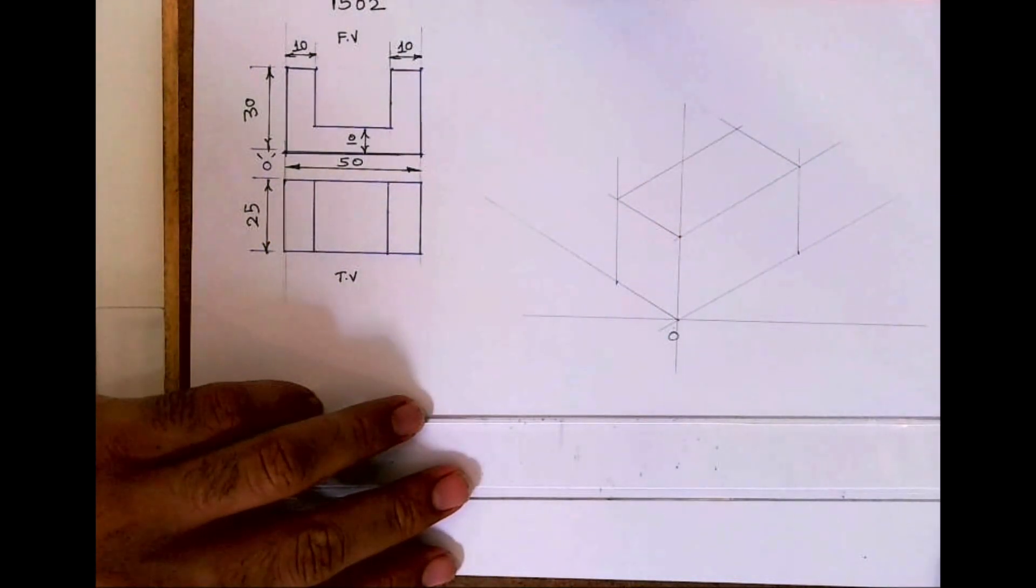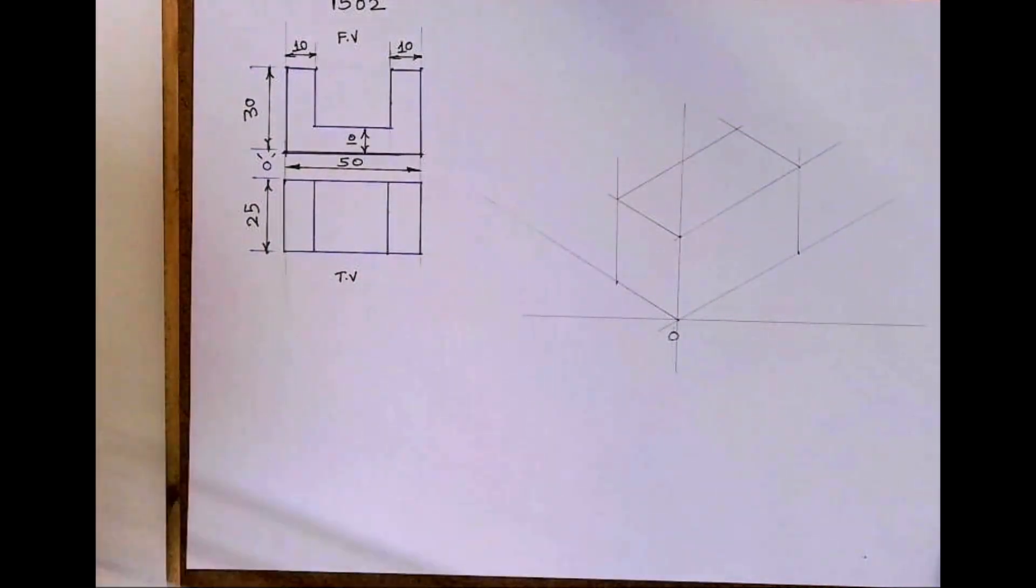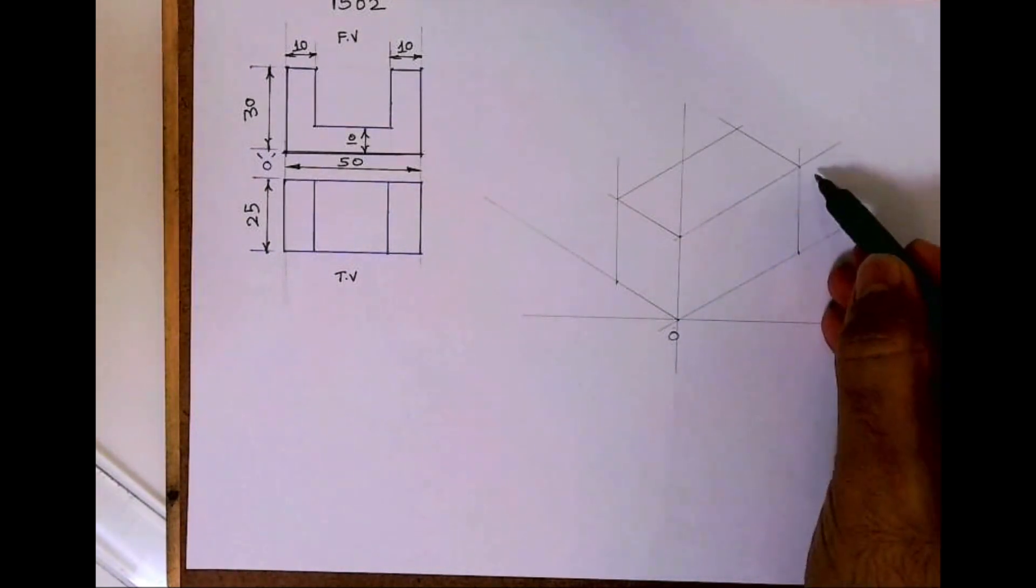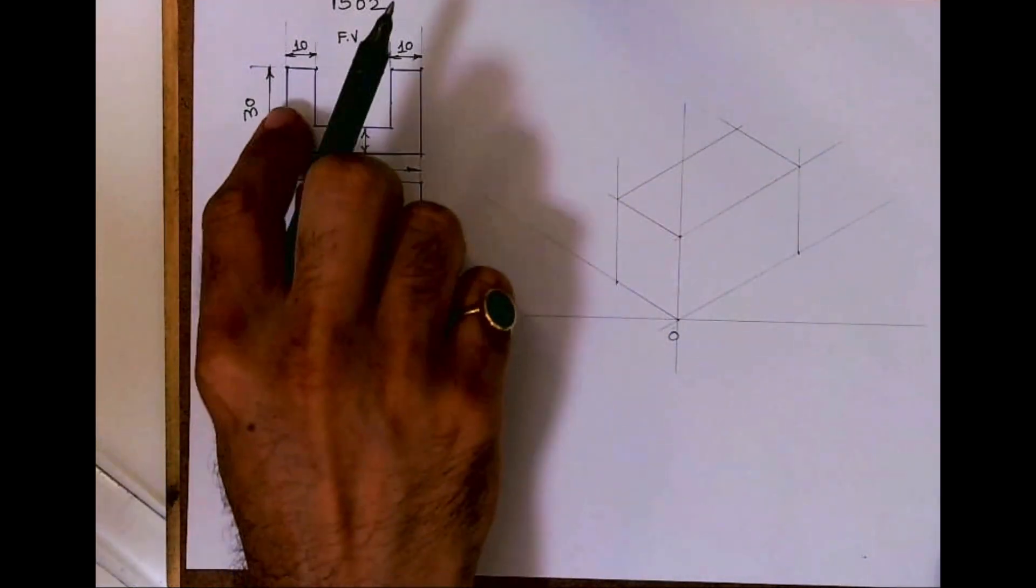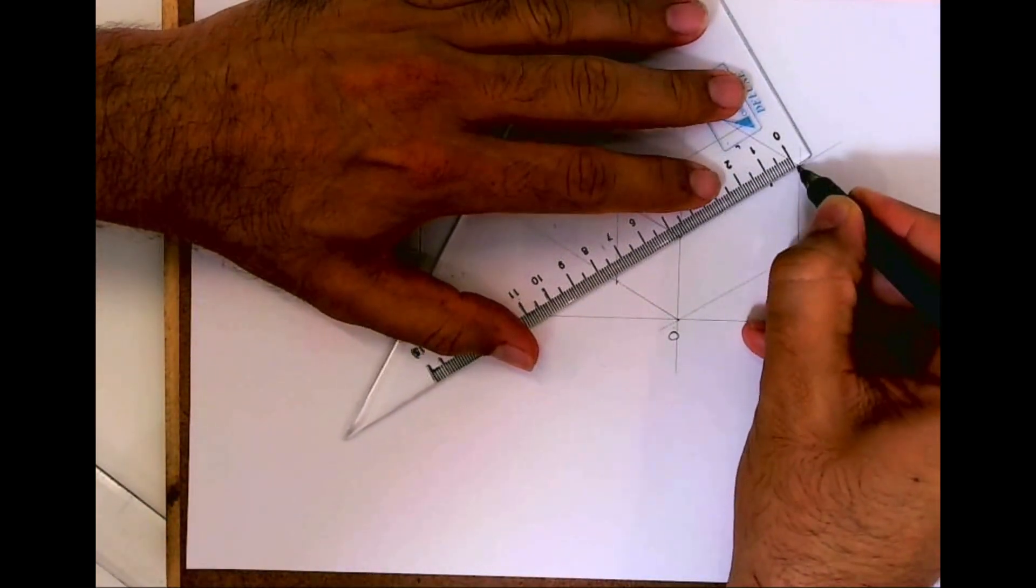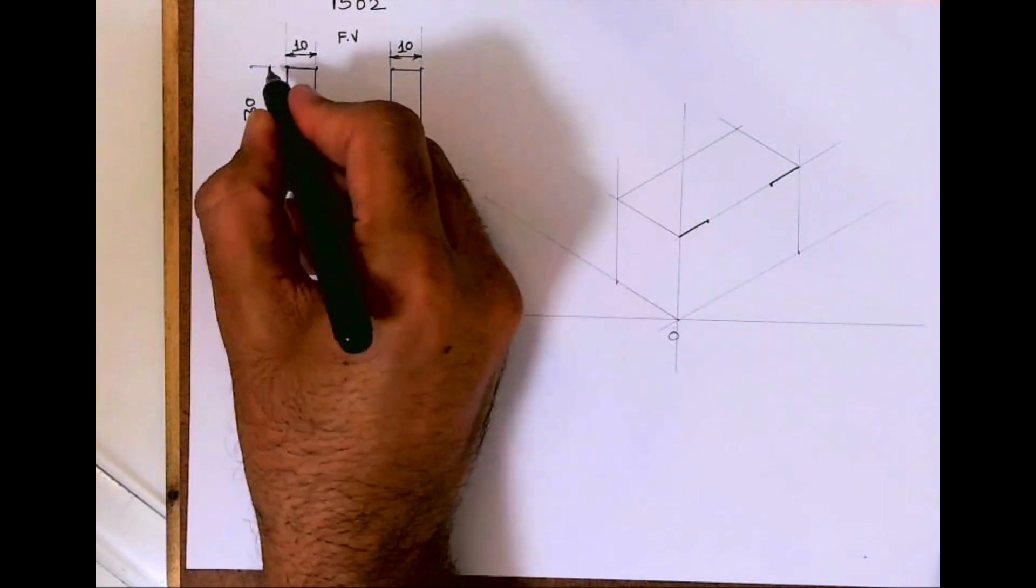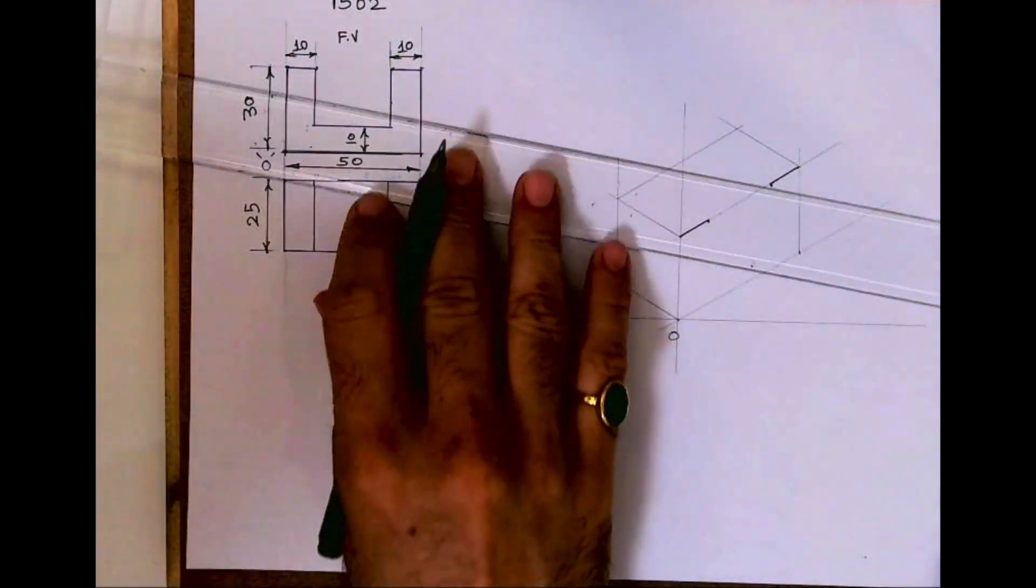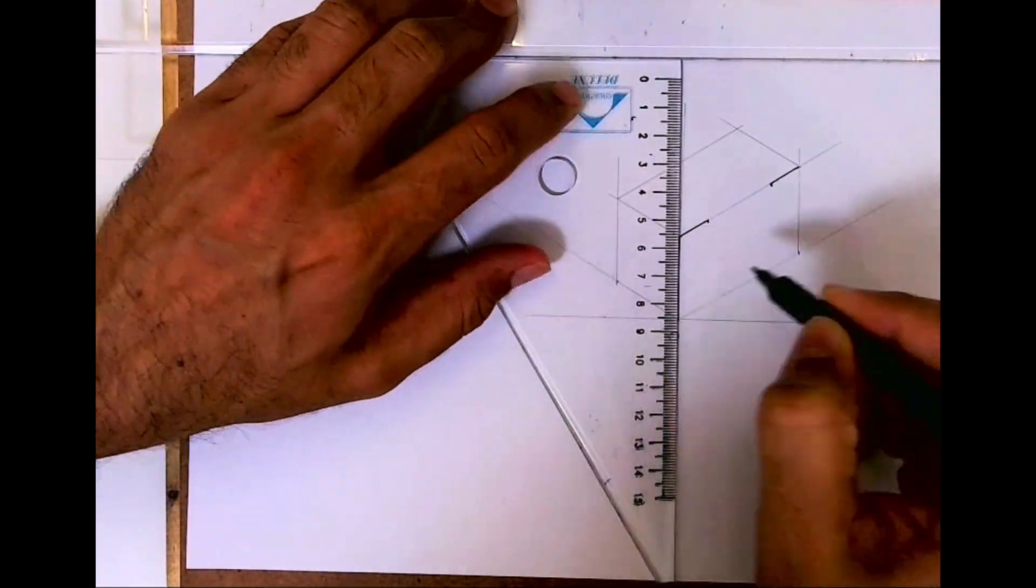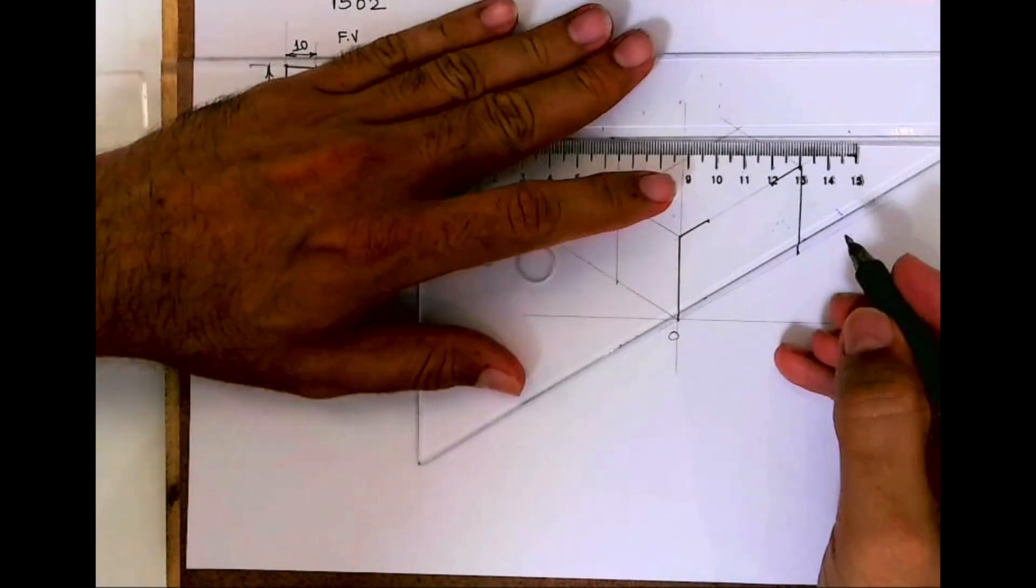Now if you see, we have a C-shape, so we need to draw that. See this, it's a U-shape also we can say. So first we will mark 10, 10 from here. See, first we will draw 30, the outside line, and we'll draw the bottom one.